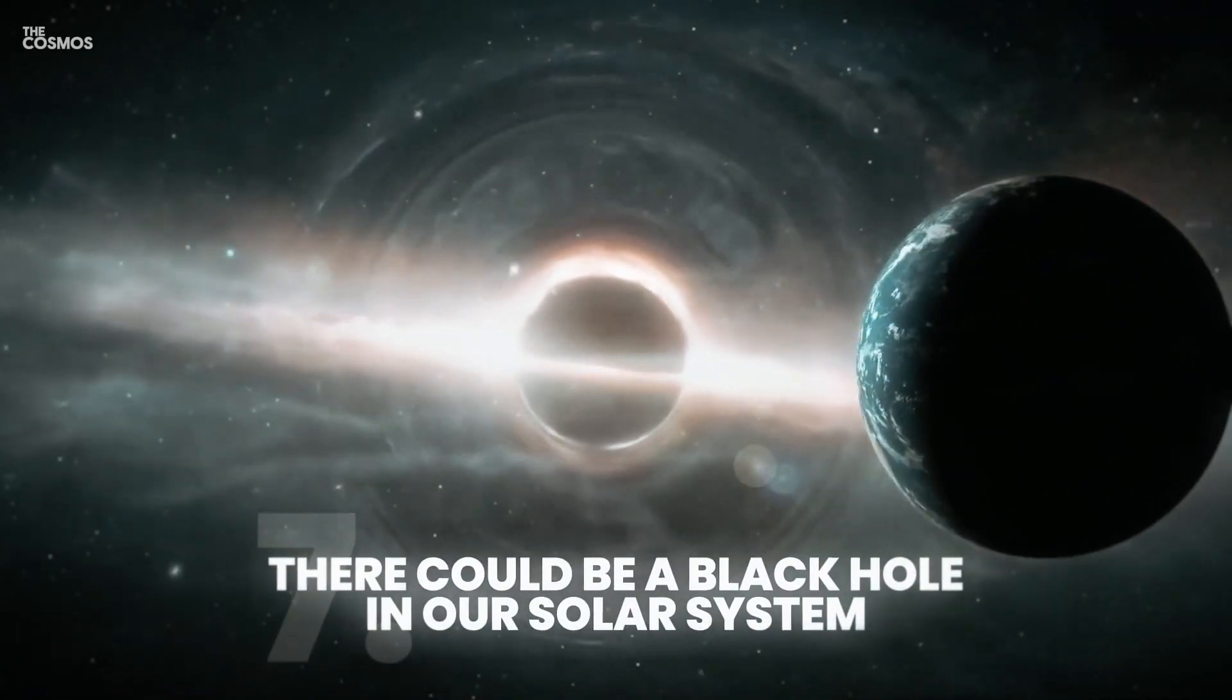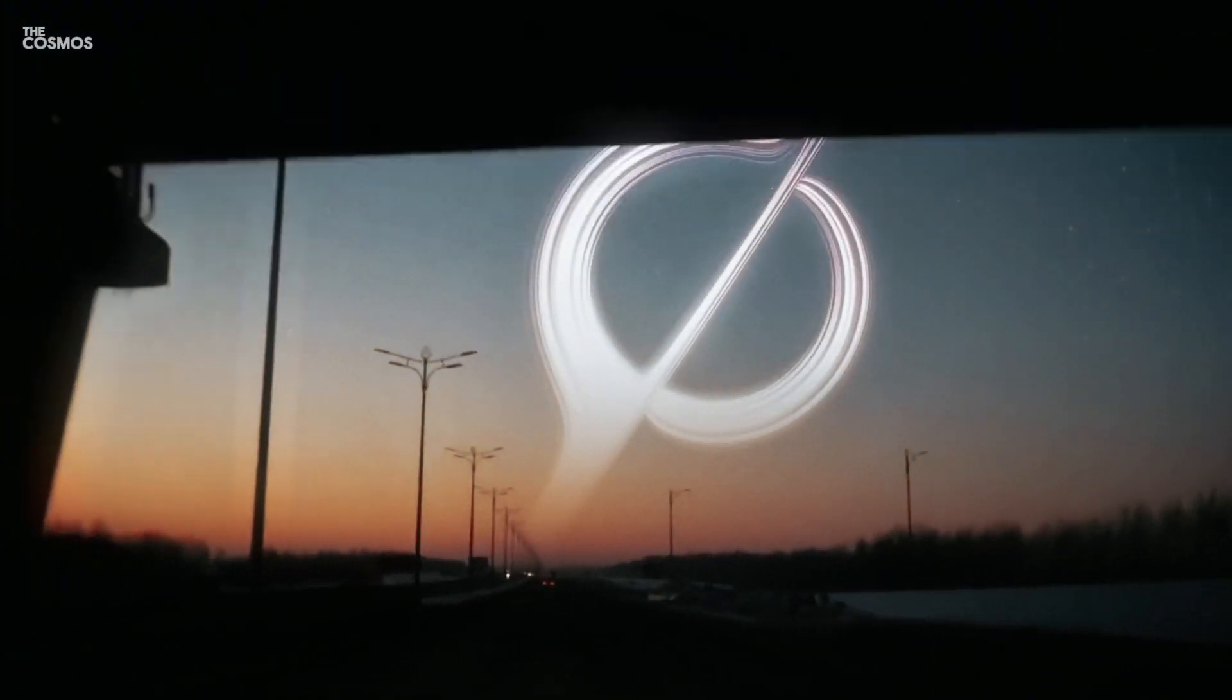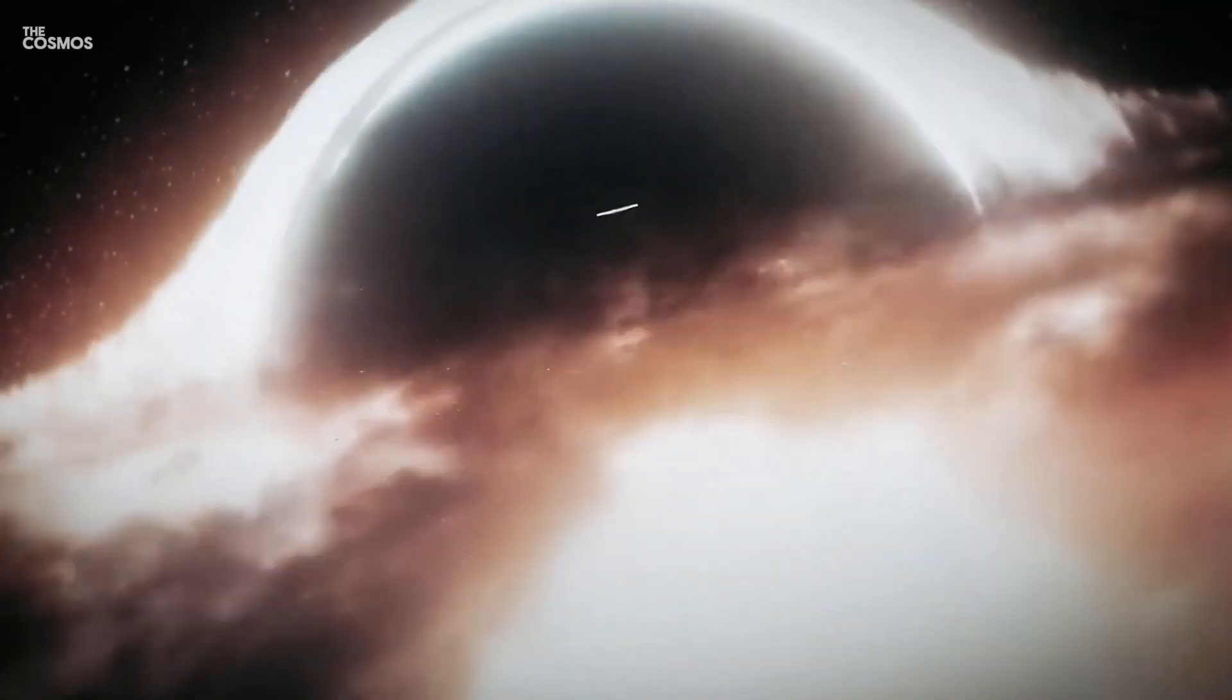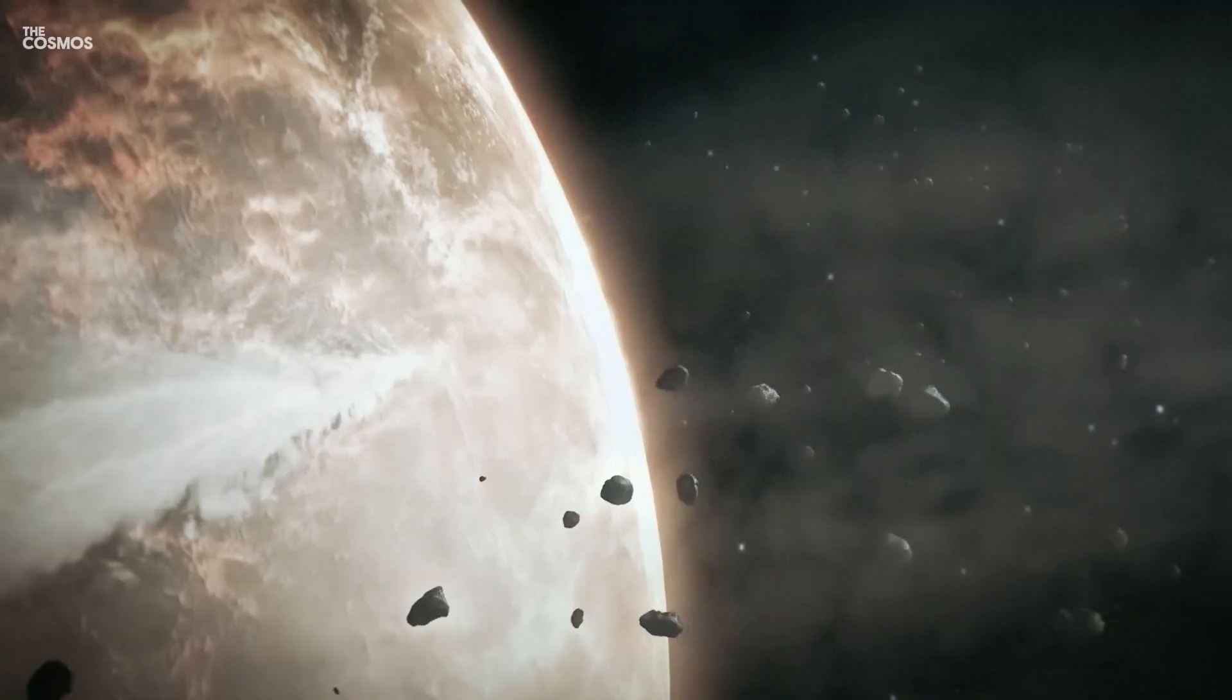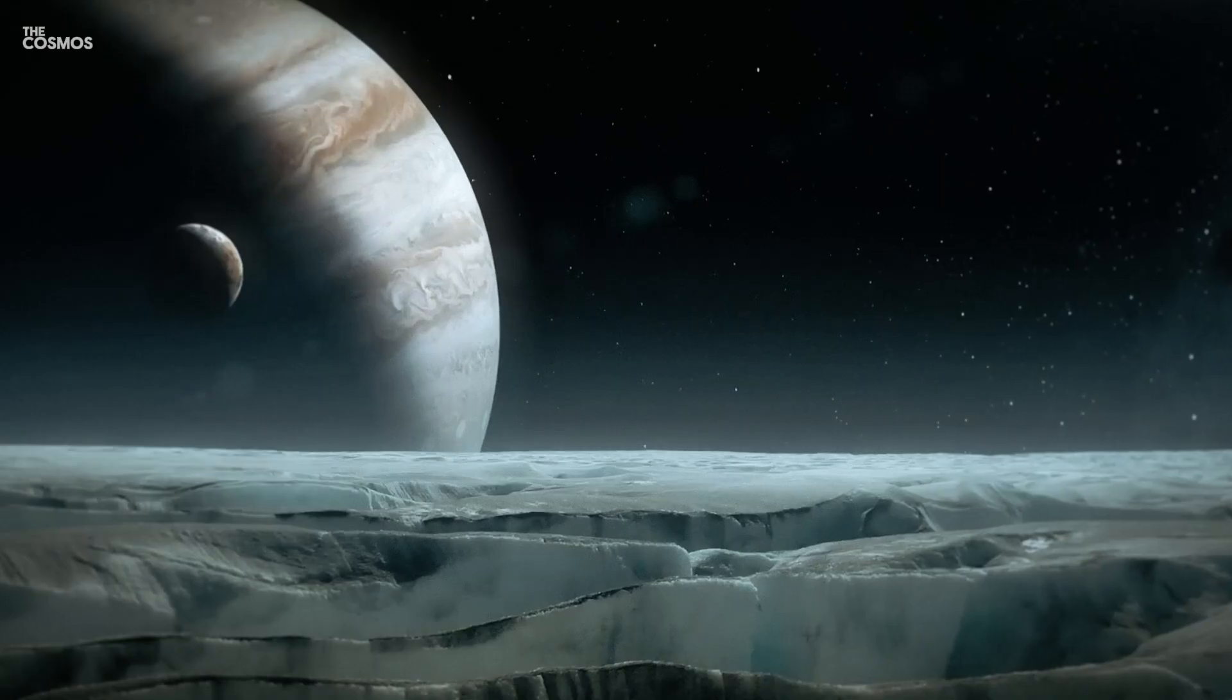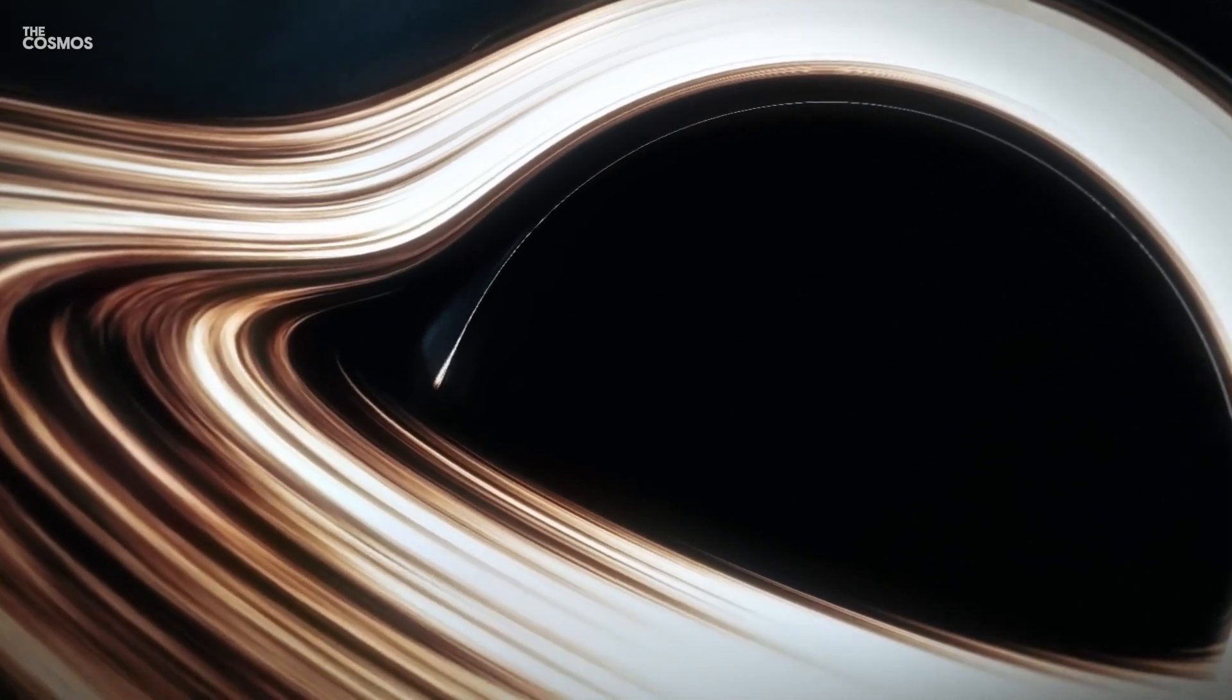There could be a black hole in our solar system. Some astronomers speculate that a primordial black hole could be lurking in the outer reaches of our solar system, acting as the elusive Planet 9. This hypothetical black hole, with a mass five to ten times that of Earth, could explain the unusual orbits of certain distant objects in the Kuiper Belt. While it is still a controversial idea, future surveys of the sky might reveal its presence.